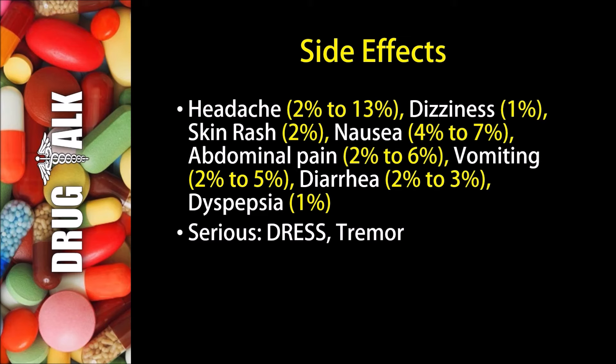Now, as with all medications, there are some side effects or adverse reactions that patients may experience while using Fluconazole. 2–13% may experience a headache, while 1% may experience dizziness. A rash may occur 2% of the time, and 4–7% of patients may experience nausea. 2–6% may experience abdominal pain, and vomiting may occur 2–5% of the time. 2–3% of patients may experience diarrhea, and dyspepsia may happen 1% of the time.